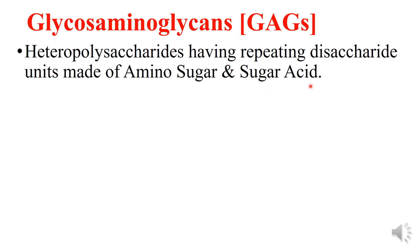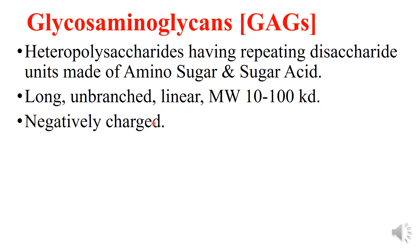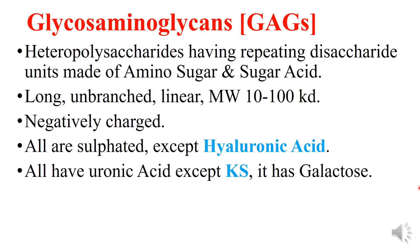These disaccharides are repeated several times to form a heteropolysaccharide unit. GAGs are long, unbranched, and linear, having a molecular weight between 10 to 100 kilodaltons. They are negatively charged and all are sulfated, except hyaluronic acid. They all have uronic acid,